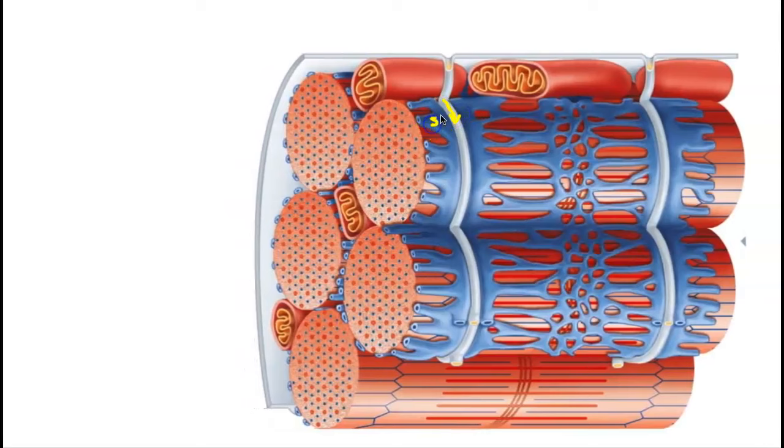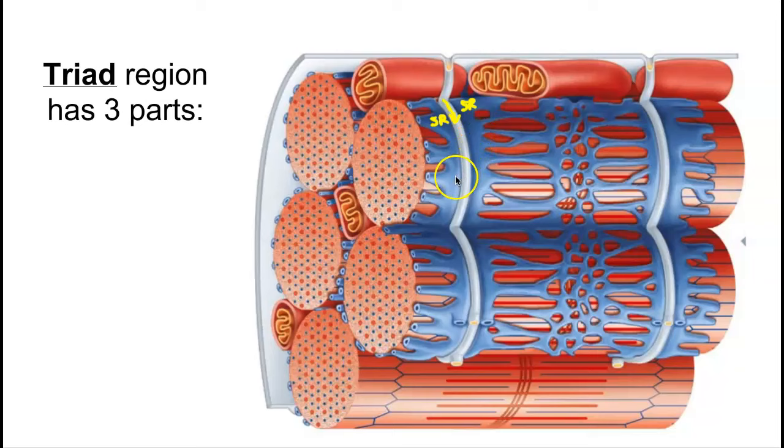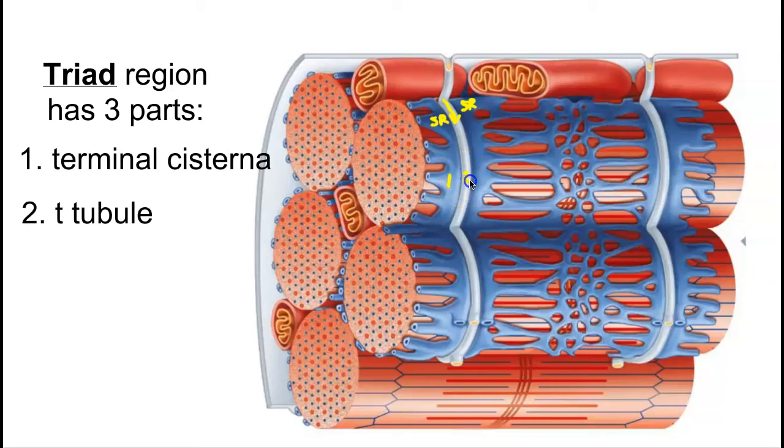This region where the sarcoplasmic reticulum surrounds the T-tubule is known as a triad region because it contains three areas. It contains the area where the SR is ending—that's called a terminal cisterna. Then we can see the T-tubule, and then we see the terminal cisterna of the SR on the other side of that. This is what is known as a triad: the terminal cisterna of the SR on either side of the T-tubule.